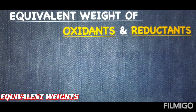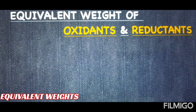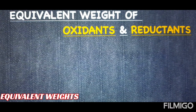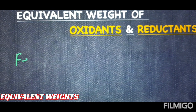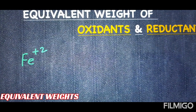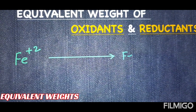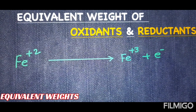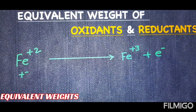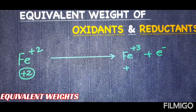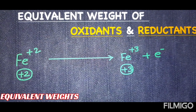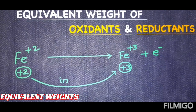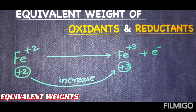First, students need to know what is an oxidant and what is a reductant before calculating the equivalent weight of those species. Taking an example of Fe²⁺: if in a given reaction, Fe²⁺ changes to Fe³⁺, this process is done by the losing of one electron. The species has an oxidation state of +2, and the product has an oxidation state of +3. An increase in oxidation state, or loss of an electron, is called oxidation.